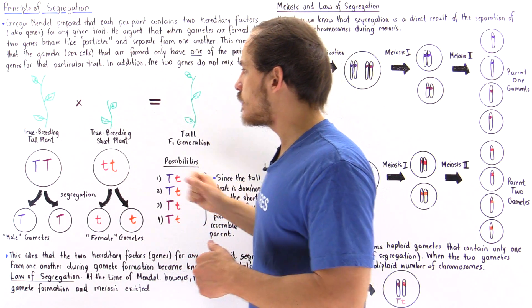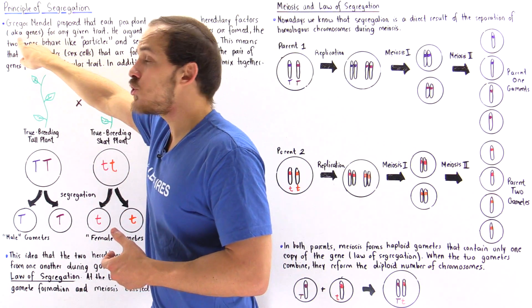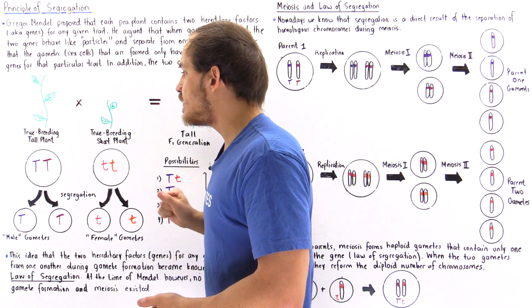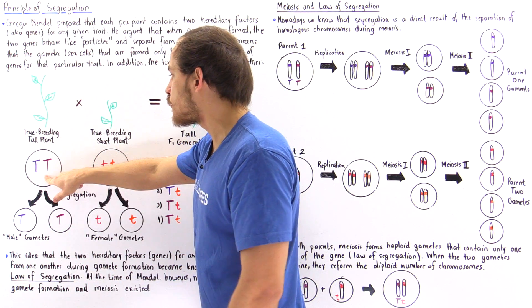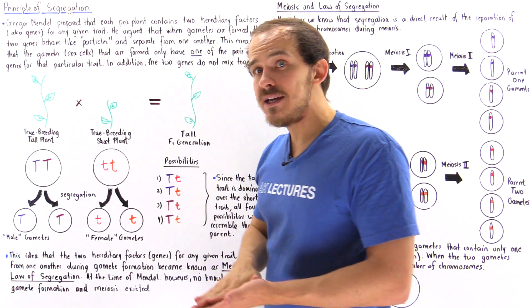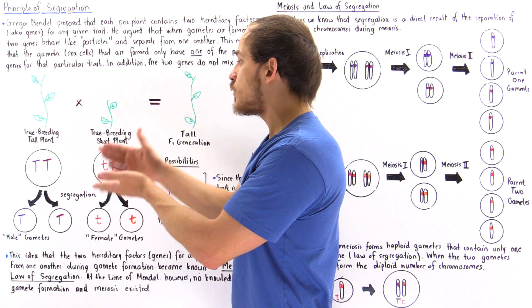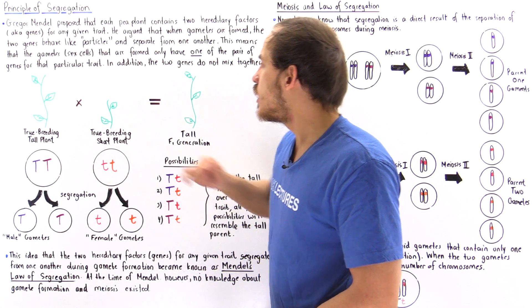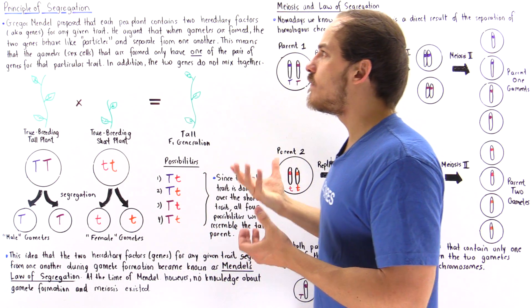Looking at the diagram: the tall true breeding plant contains two genes that are both tall — uppercase T, shown in dark purple and light purple. The short true breeding plant contains two lowercase t genes, meaning both are recessive — shown in red and orange. This is the Law of Dominance.